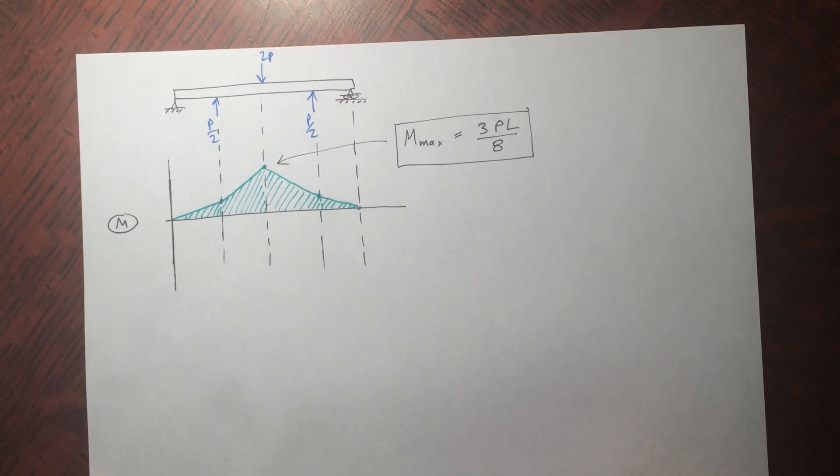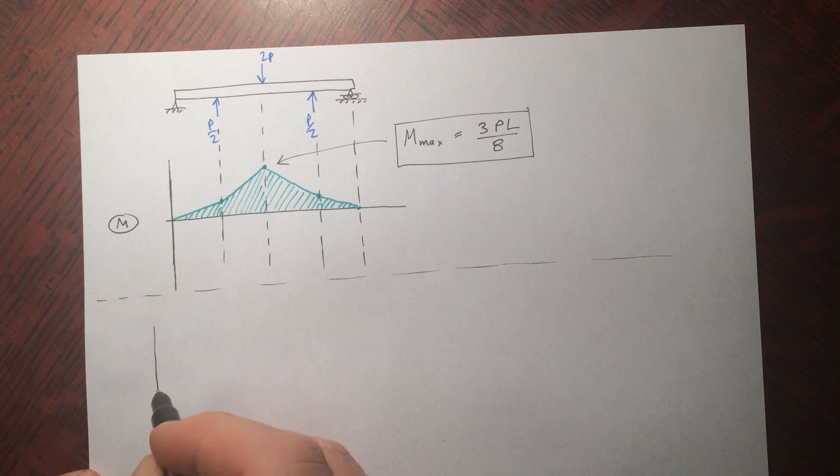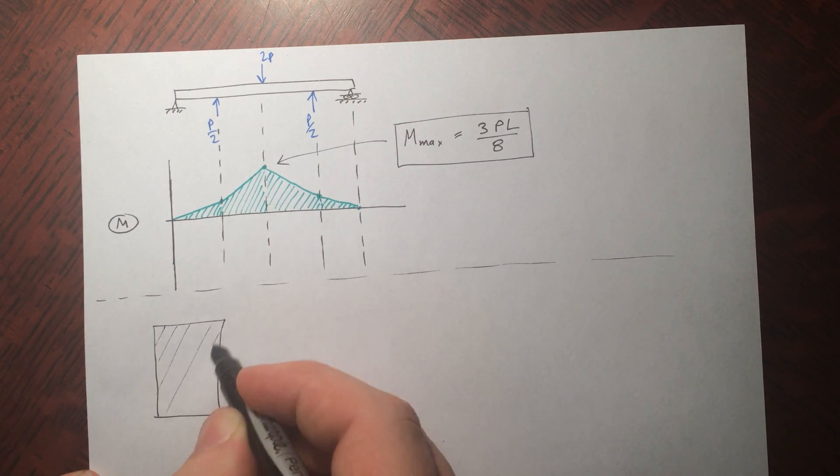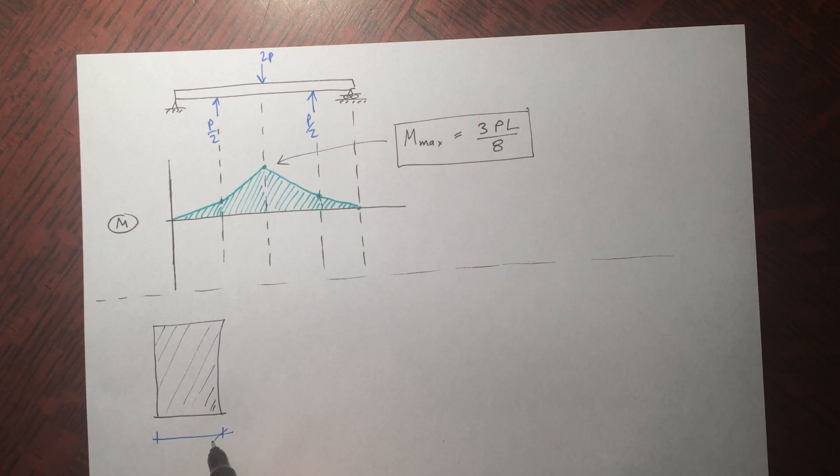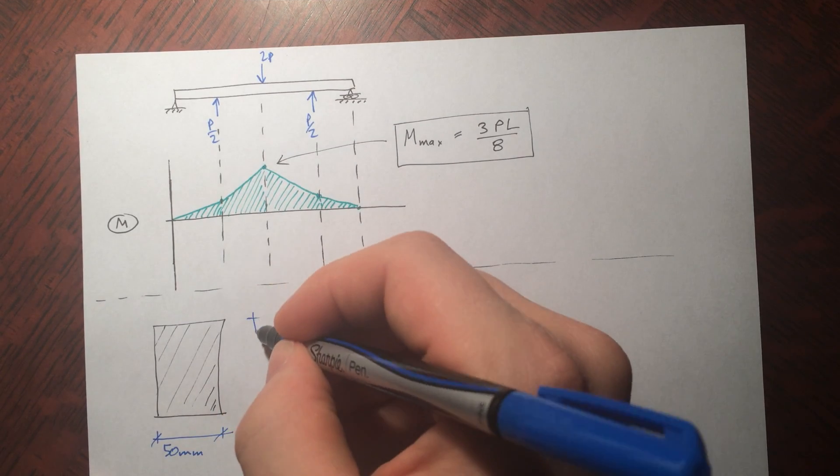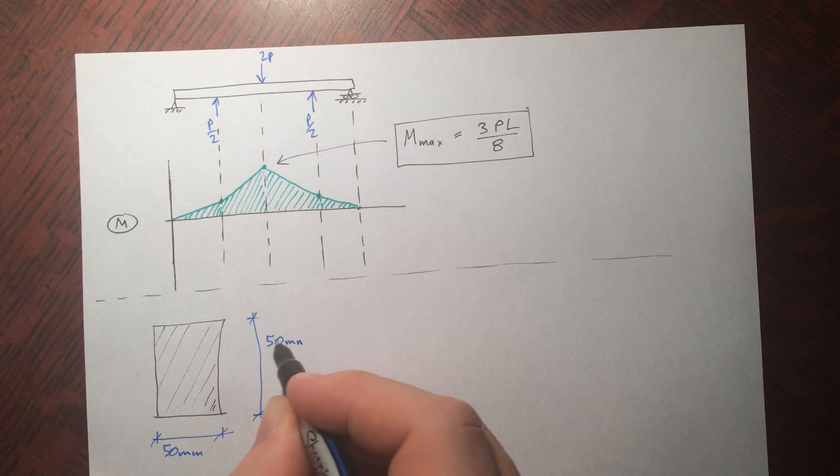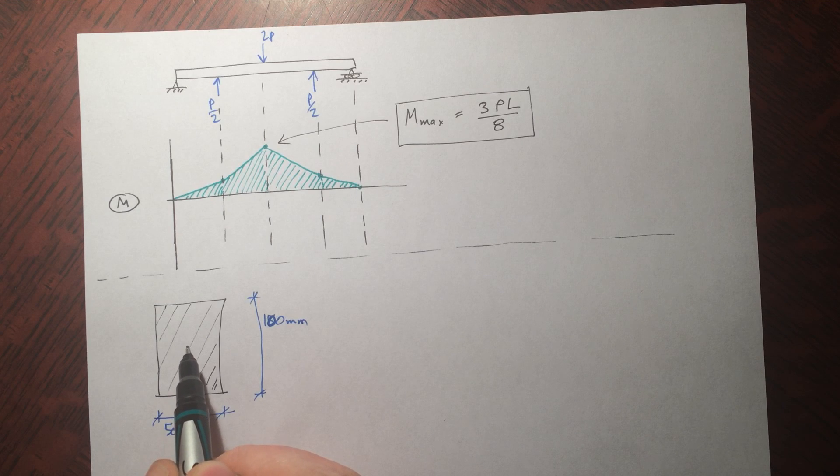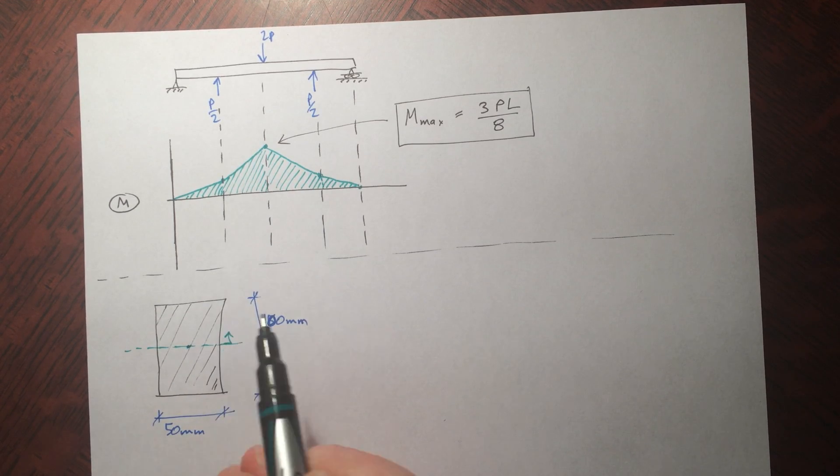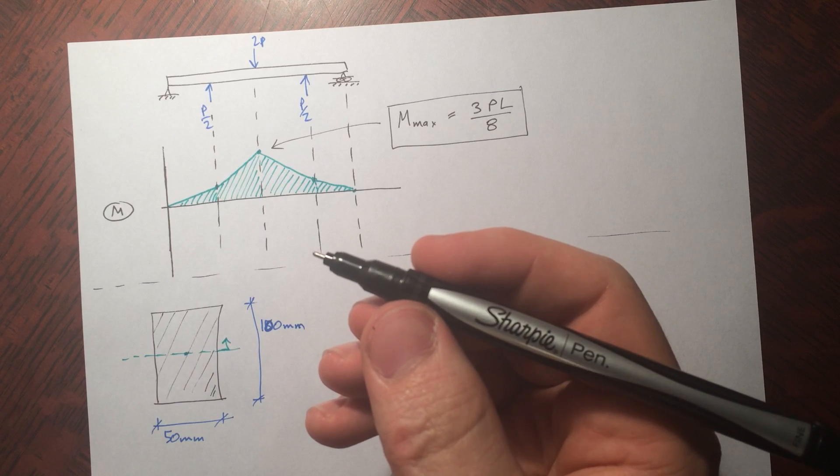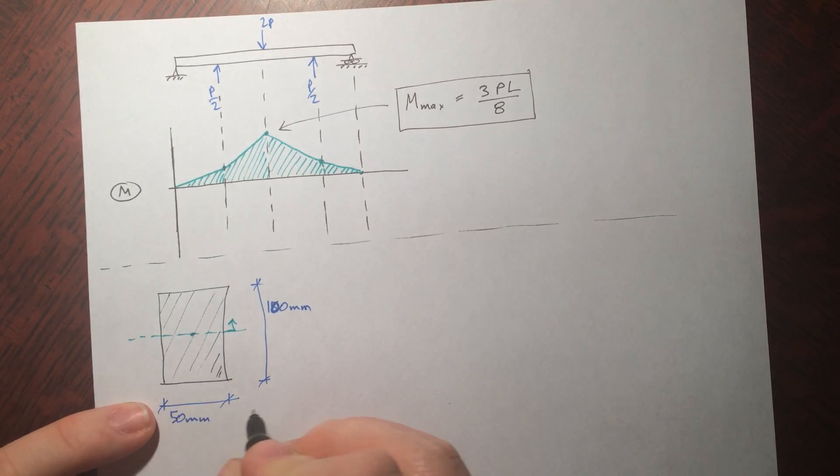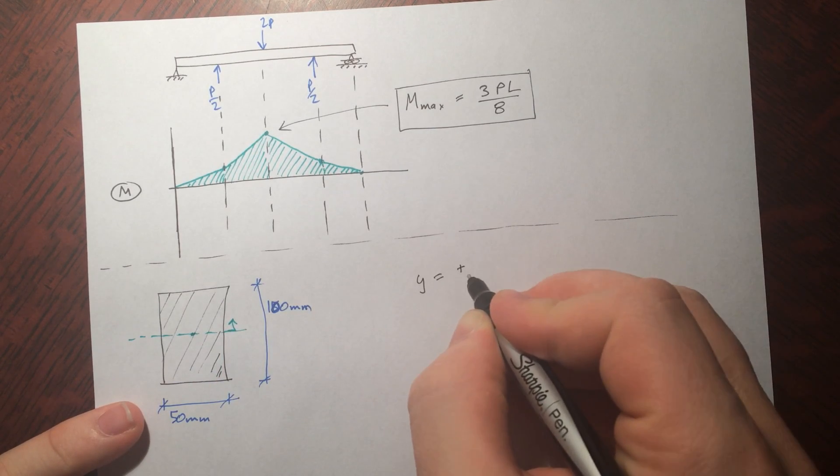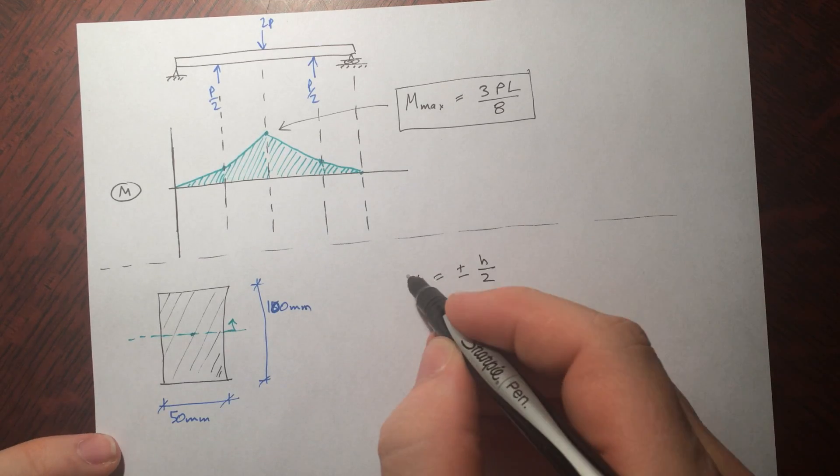The second one is y. So what y distance should we use? Taking a look at our cross-section here, it's not too hard to see. Now our neutral axis is what we measure y from, and our neutral axis is the centroid. So this is where y is measured from, so what's going to give our maximum value of sigma? It's the greatest value of y, and in this case, y is greatest when we're at the top or the bottom. So we can say, if we use this as b and this is h, we can say y is equal to plus or minus h by 2. That's the second piece of the puzzle.